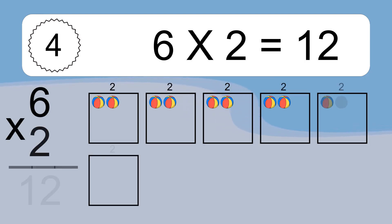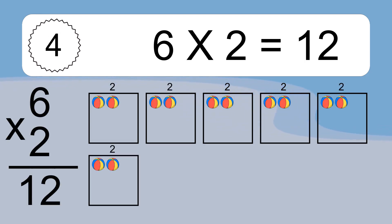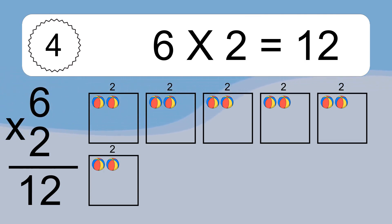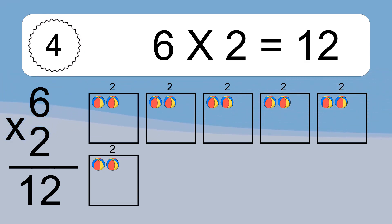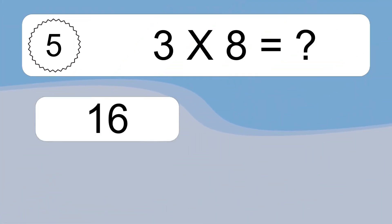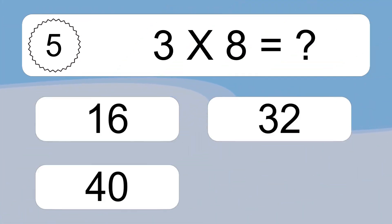6 times 2 equals what? 6 times 2 equals 12. We have 6 boxes and each box has 2 colorful balls inside. If you count all the balls in all the boxes together, you will have 6 times 2 balls. This equals 12 balls.